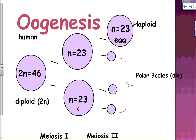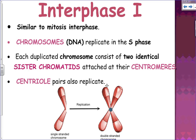With oogenesis it's a little different. We start with 46 — the regular body cell number. Meiosis one produces 23, and meiosis two also produces four cells. But notice the difference: the polar bodies are not going to make it — they die — and you're left with one haploid egg.